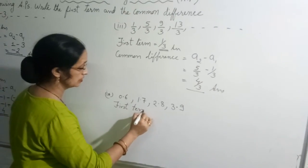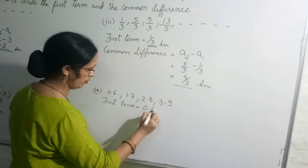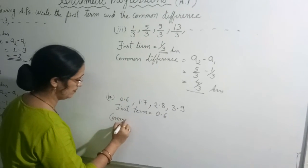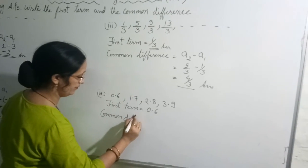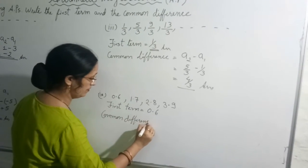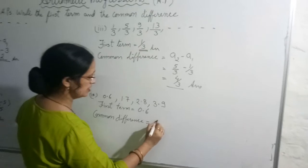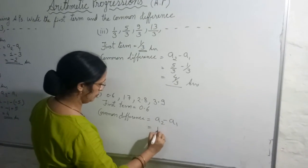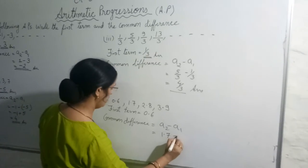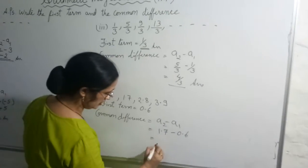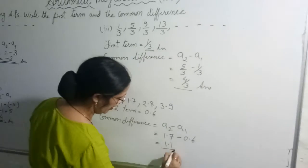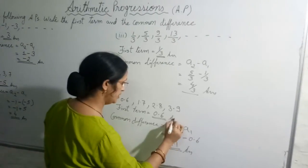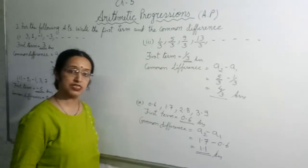The first term is equal to 0.6. The common difference is a2 minus a1, which is 1.7 minus 0.6, so the common difference is 1.1. Be very careful about this calculation. 0.6 is your first term.